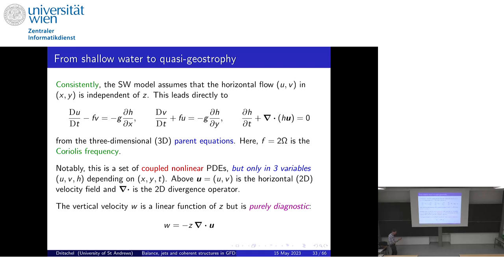Going back to shallow water, we start with the given equations: x and y momentum equations, where H is the full depth of the fluid, and the mass continuity equation. I've now corrected what the Coriolis frequency is — it's 2Ω, or if you want to think of an f-plane projection on a spherical planet at local latitude, you might have a sine of the latitude. I'm going to take these as my mathematical system. There are three variables: u, v, and h.